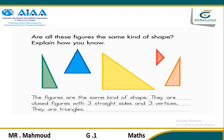Students may even name the figures as triangles. Listen for some students to point out that the shapes have different colors, sizes, and position, but all of them are triangles. These students understand that two-dimensional shapes have some attributes that define them, such as the number of straight sides and vertices. They also have other attributes, such as color, size, and position, that do not define what shape they are.